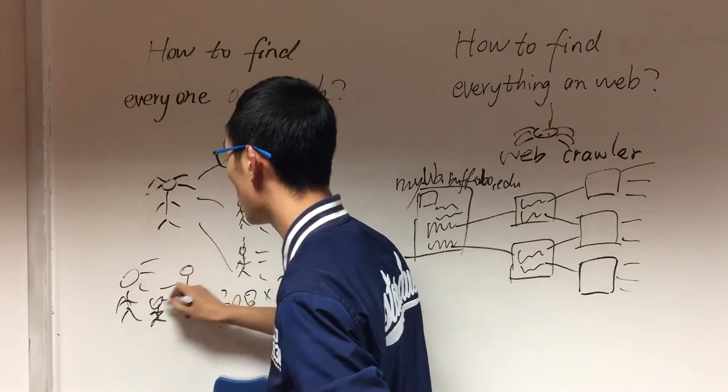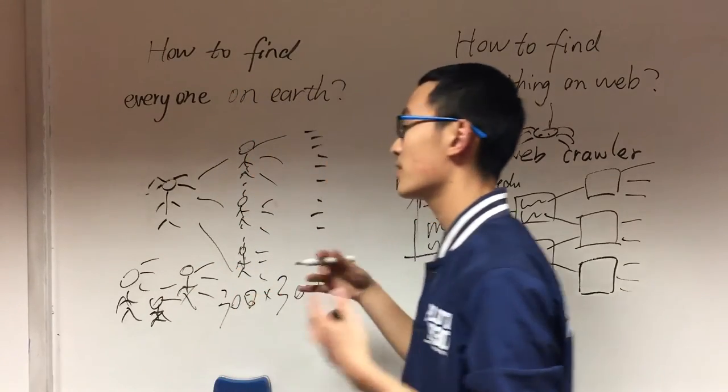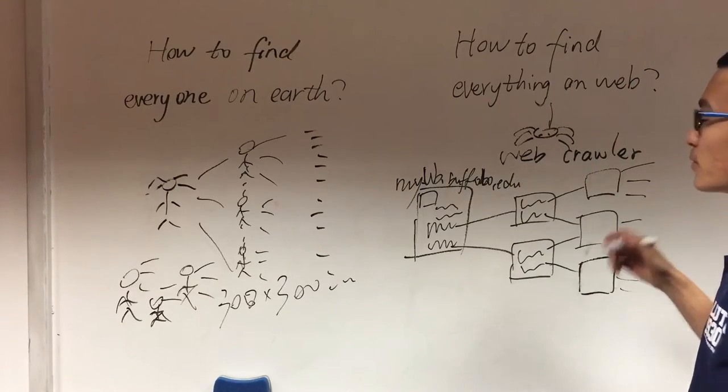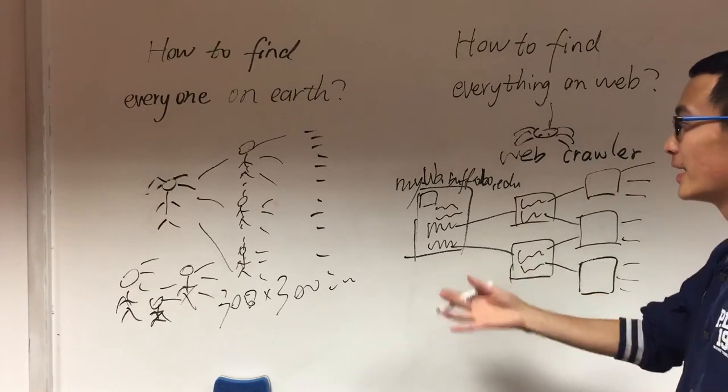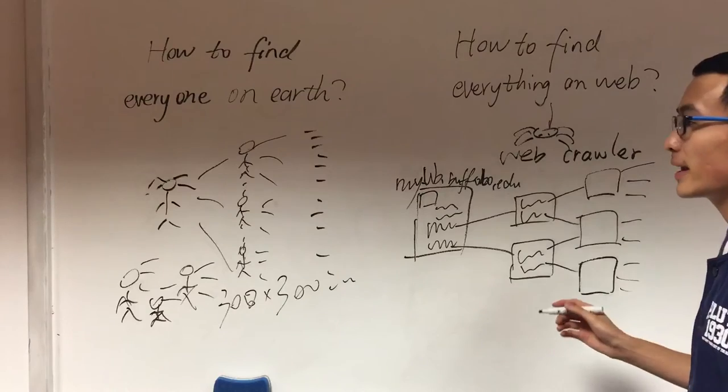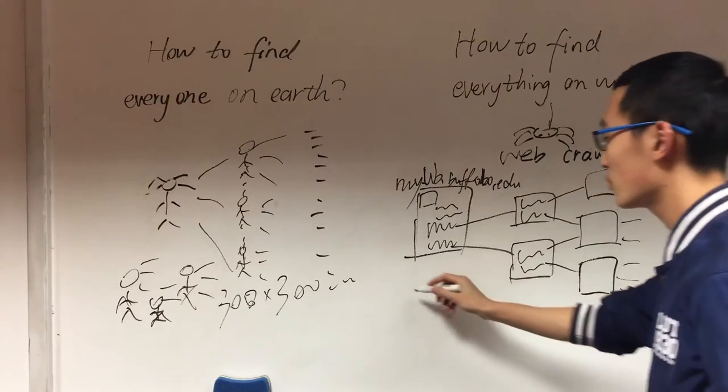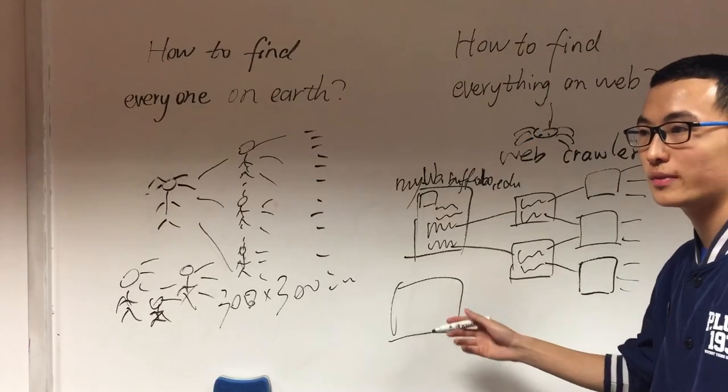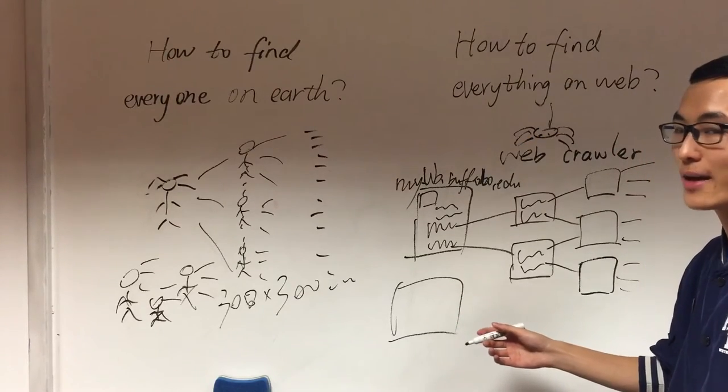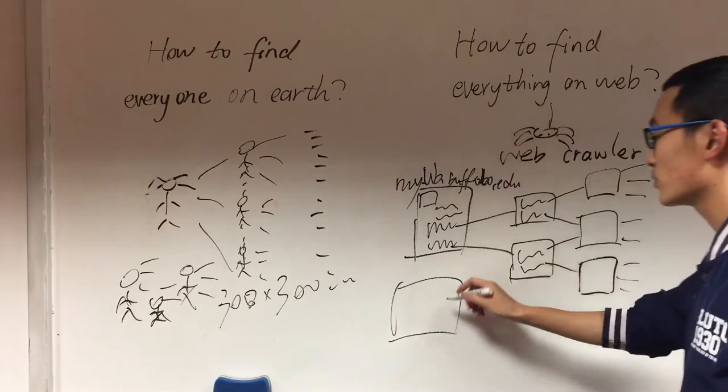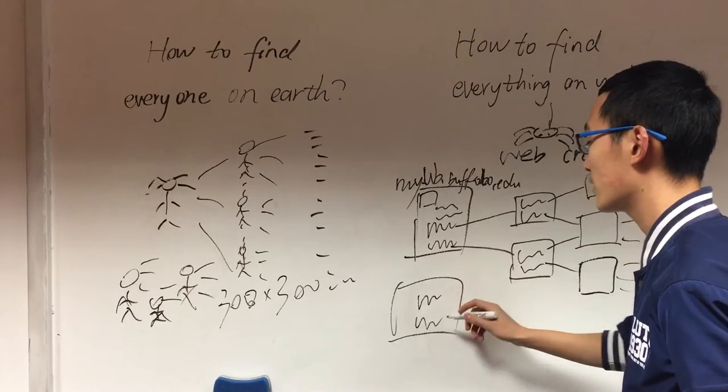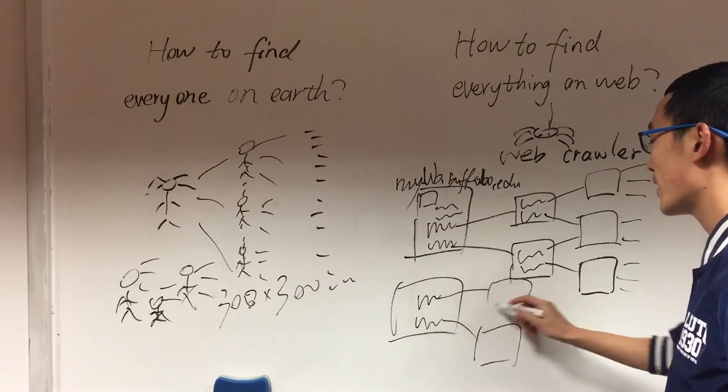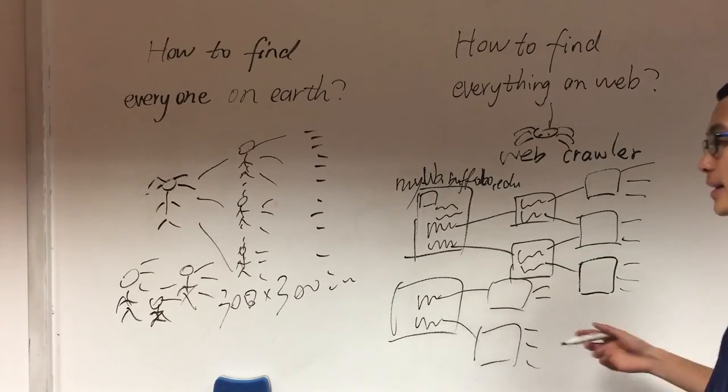They know more people than my mom does. So the thing is pretty much similar to that. Web Crawler can start from several starting points, such as YouTube, Facebook, Amazon, and do the same thing: find all the links in these pages and follow the links to more pages. Do this over and over again.